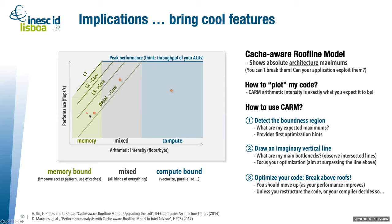When we analyze the application, how do we detect the first bottlenecks? In the cache-aware roofline model, arithmetic intensity is a property of your application. It is not expected to change unless you restructure your code. The first thing we do is draw an imaginary vertical line at the arithmetic intensity of your application, then look at which roof lines we are intersecting to detect potential bottlenecks.